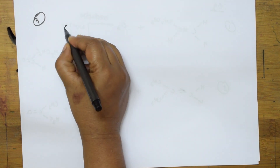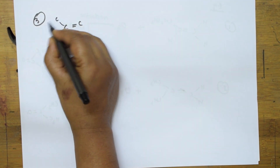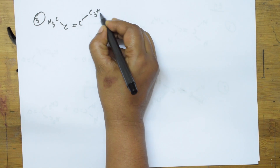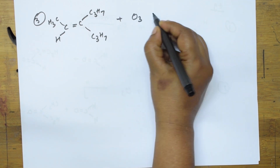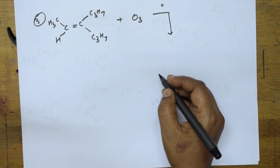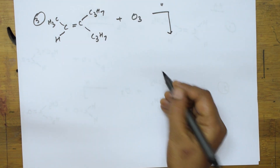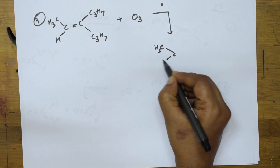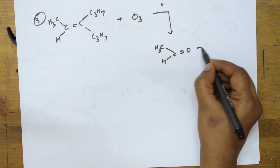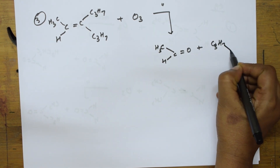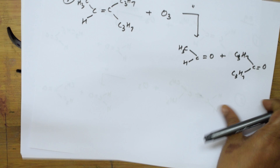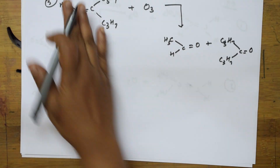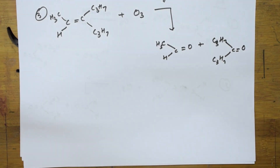Third example: suppose I have an alkene with one methyl group here and C3H7 here, and C3H7 on the other side. I add ozone to this — same reductive workup. This bond breaks and I get CH3CH=O (an aldehyde) and C3H7–C=O–C3H7. Both things I am breaking and writing as two different products.